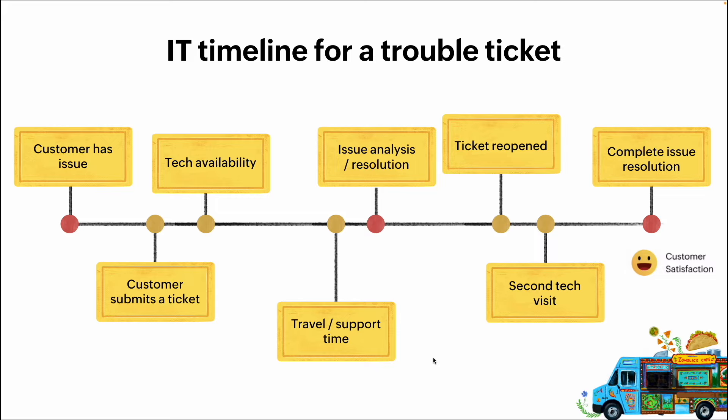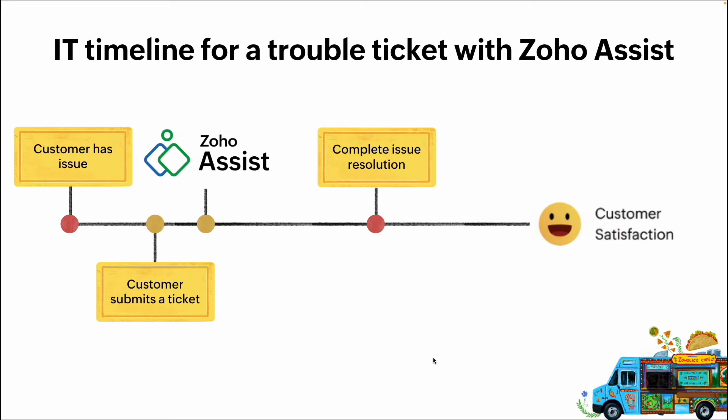So let's look at the same situation but using Zoho Assist. Bob comes in, sits down at the computer, realizes something's wrong, goes and gets a cup of coffee, comes back, and puts in the same ticket. Immediately that ticket pops up, the tech sees it, calls Bob and says, 'What's going on?' Bob says his computer's not working. The tech says, 'Go to join.zoho.com, type in these six or nine digits, let's get connected.'